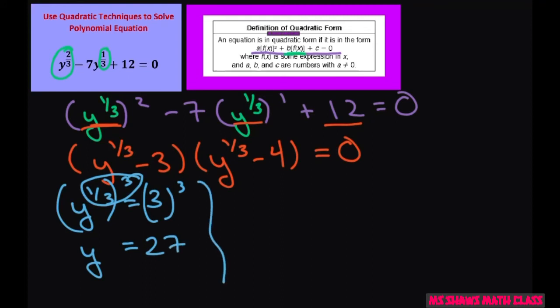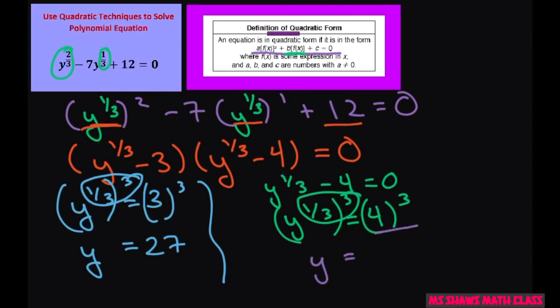Now for this piece you have y to the one-third minus 4 equals 0. Add that 4 to both sides of the equation. Do the same thing. Power it. So now we have y equals 4 cubed which is 64.